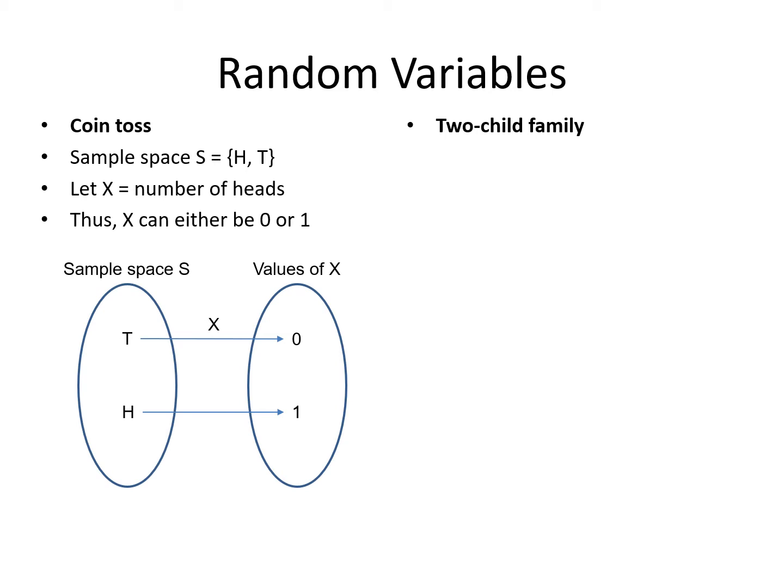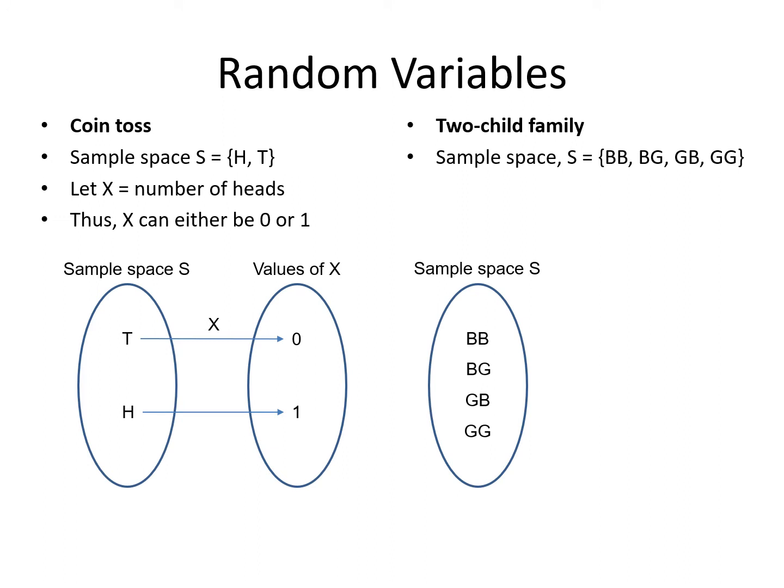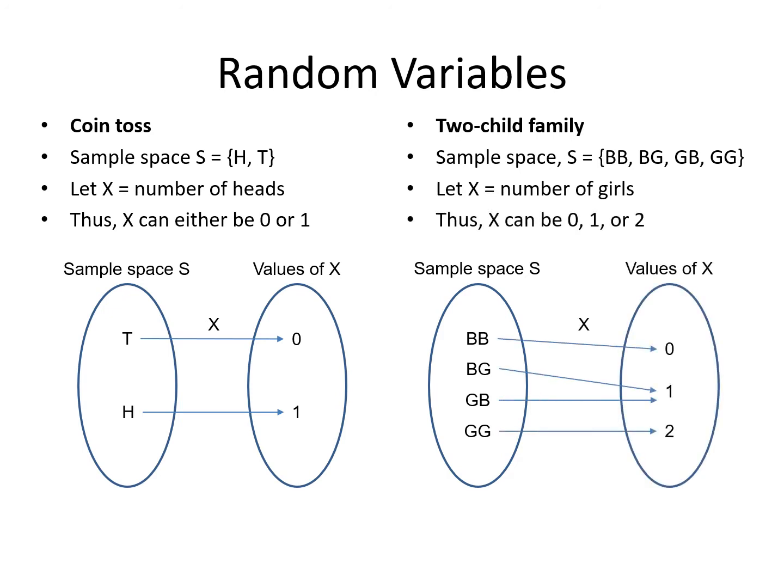Now let's consider an example on the number of female children in a family. In a two-child family, the possible combinations of the sexes of children are boy-boy, boy-girl, girl-boy, and girl-girl. If we let x be the number of girls, the possible values are 0, 1, or 2. If the combination is boy-boy, the value of x is 0. If the combination is boy-girl or girl-boy, x is 1. If the combination is girl-girl, x is 2. So x is a random variable because its values are based on a random outcome; each point in the sample space corresponds to only one numerical value.